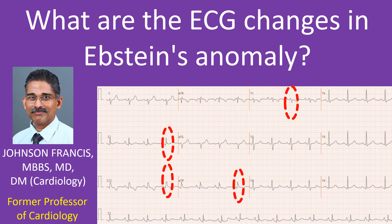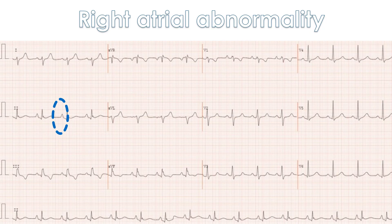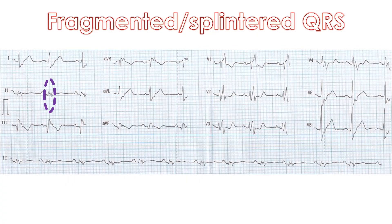ECG in Ebstein's anomaly of tricuspid valve shows right axis deviation of QRS, notched R waves in leads 2, 3, AVF, and V1 suggesting fragmented QRS. Peaked P waves indicate a right atrial abnormality, though the typical voltage criteria for right atrial enlargement of more than 0.25 mV is not satisfied. Fragmented QRS occurs in Ebstein's anomaly due to abnormal conduction in the atrialized right ventricle.